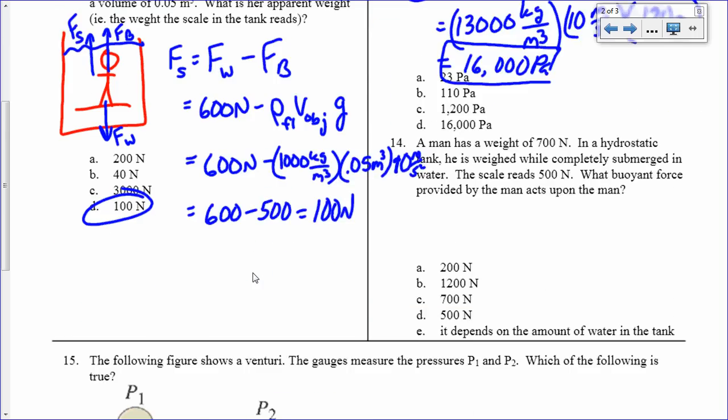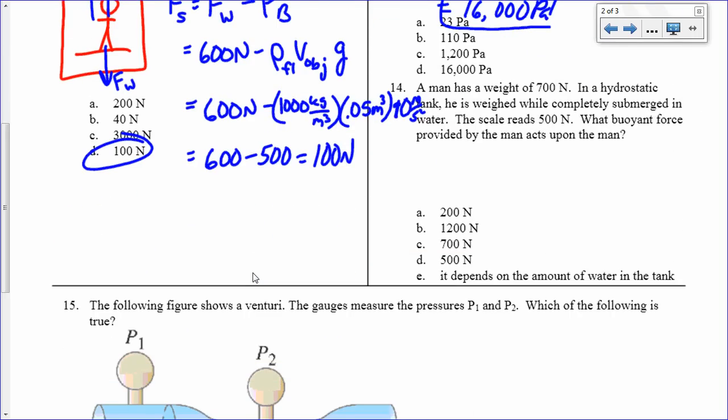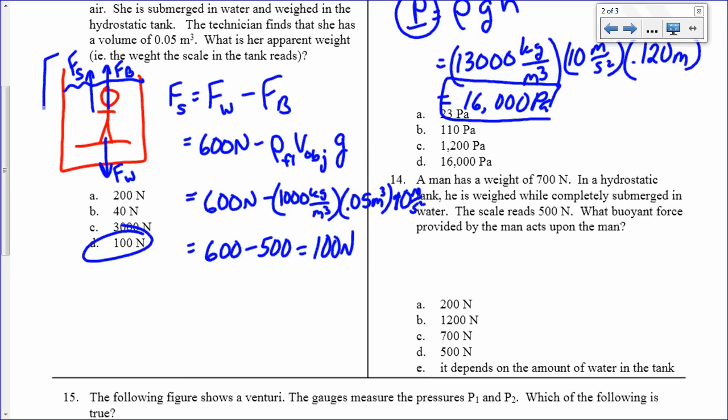A man has a weight of 700 newtons in a tank. He's weighed, and the scale reads 500 newtons. What's the buoyant force? That's very similar to this problem over here. But here, my weight is 700 newtons. My buoyant force is 200 newtons. My scale reads 500 newtons, and so the buoyant force has to be 200 newtons. So, that's 700 minus 500 equals 200 newtons.